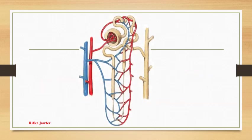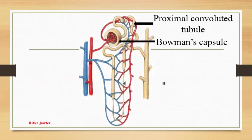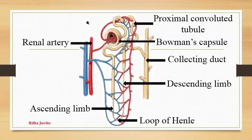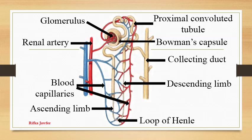The main parts of the nephron are Bowman's capsule, proximal convoluted tubule, descending limb, loop of Henle, ascending limb and collecting duct. The renal artery which supplies the blood forms a network called glomerulus inside the Bowman's capsule. It further divides to form blood capillaries, and the capillaries join to form the renal vein which removes blood from the nephron.